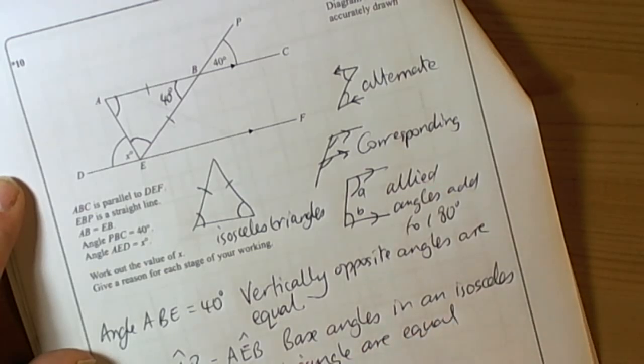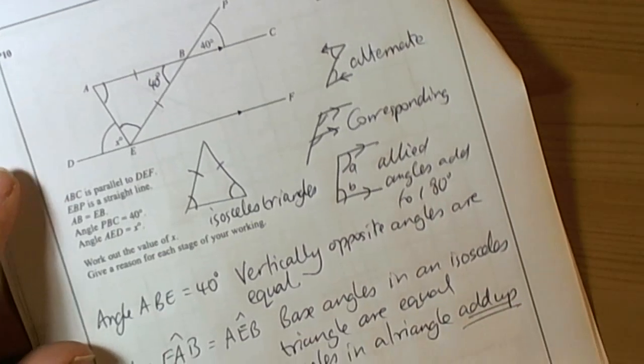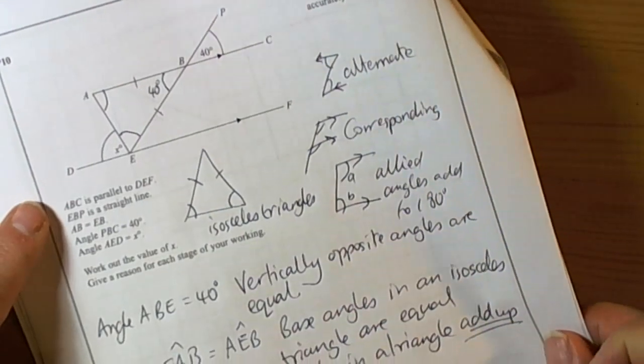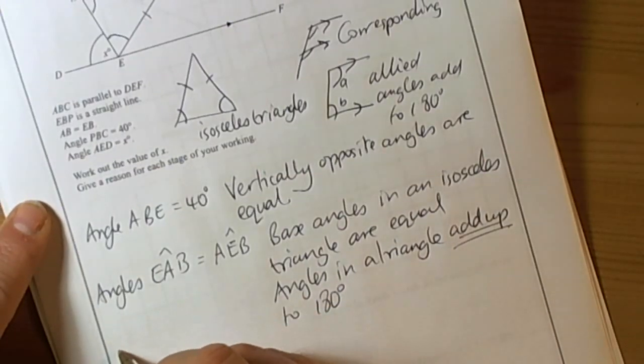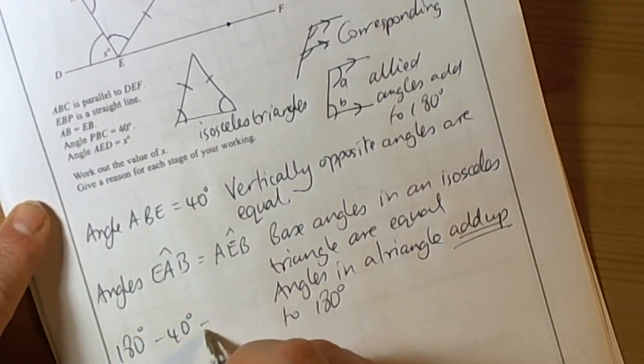We're also going to use the fact that angles in a triangle add up to 180 degrees. So we can do 180 take away the 40 is 140, and because the base angles are equal then 140 divided by 2 is 70 degrees.